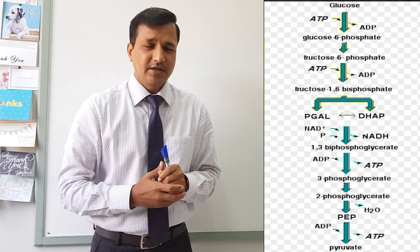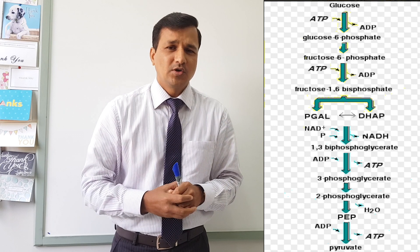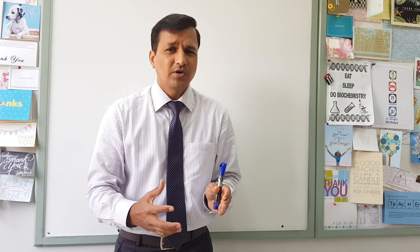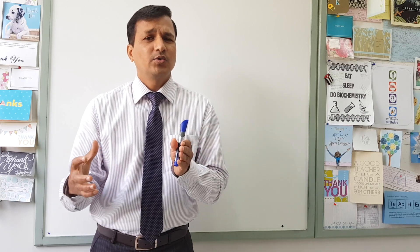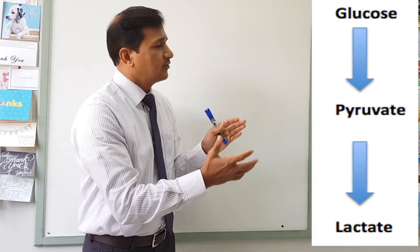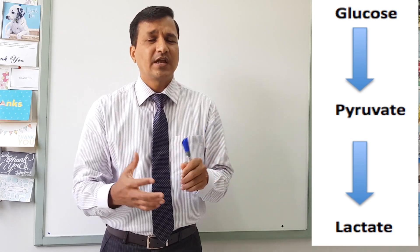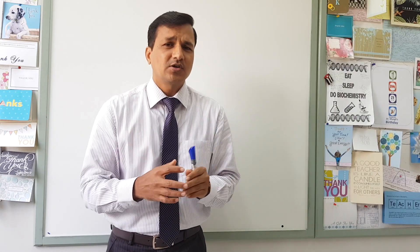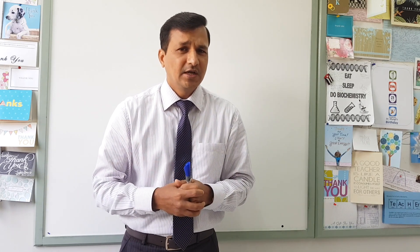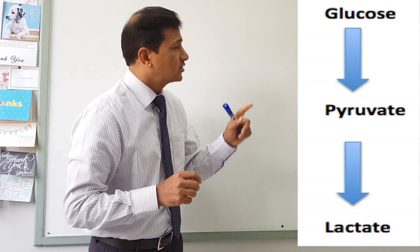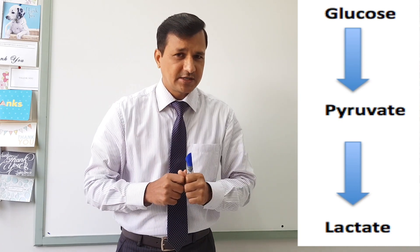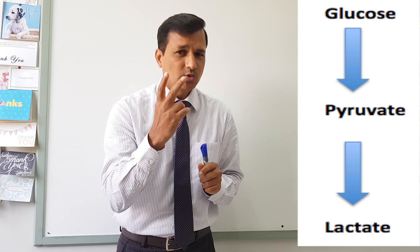The bacteria conduct glucose metabolism called glycolysis — the conversion of glucose into pyruvate. Pyruvate can then be converted into acetyl-CoA, which is aerobic glycolysis, or into lactate, which is anaerobic glycolysis. Streptococcus mutans is largely anaerobic, so it converts glucose all the way into lactate — two molecules of lactate for each glucose molecule.